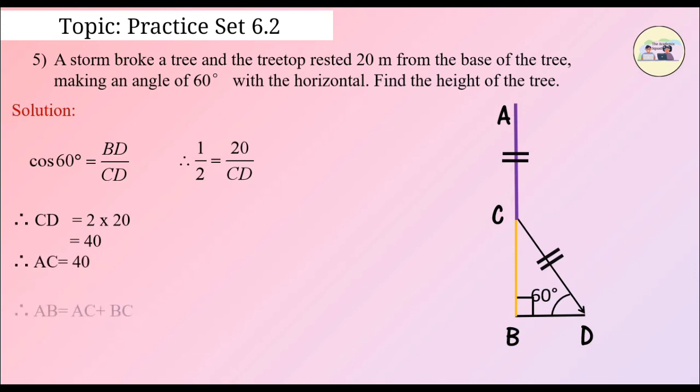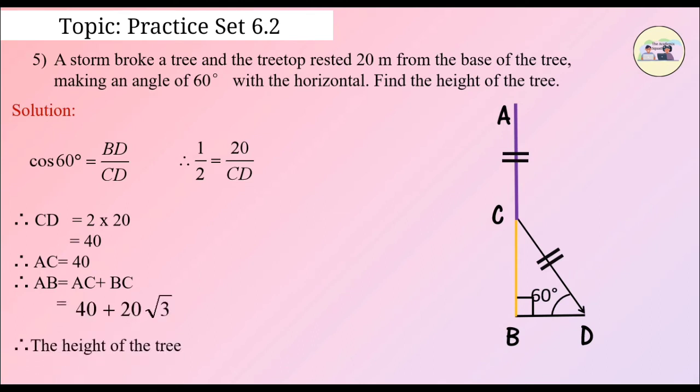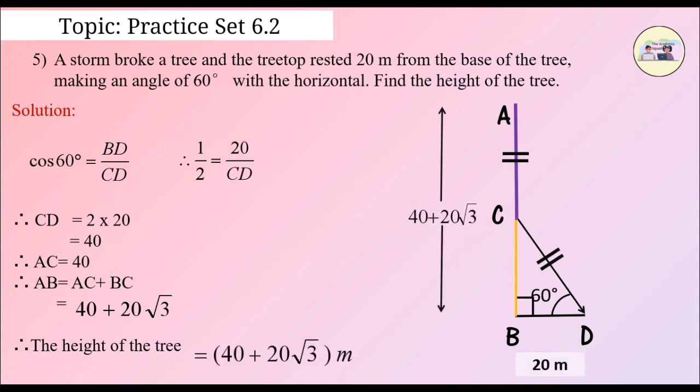Therefore, AB is equal to AC plus BC, which is equal to 40 plus 20 root 3. Therefore, the height of the tree is equal to 40 plus 20 root 3 meters.